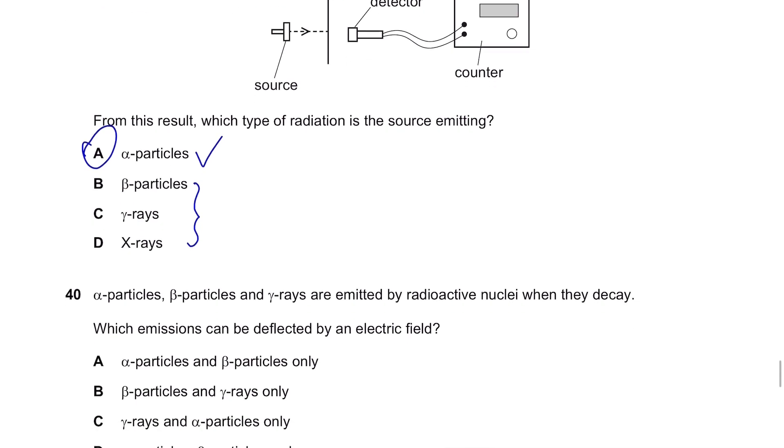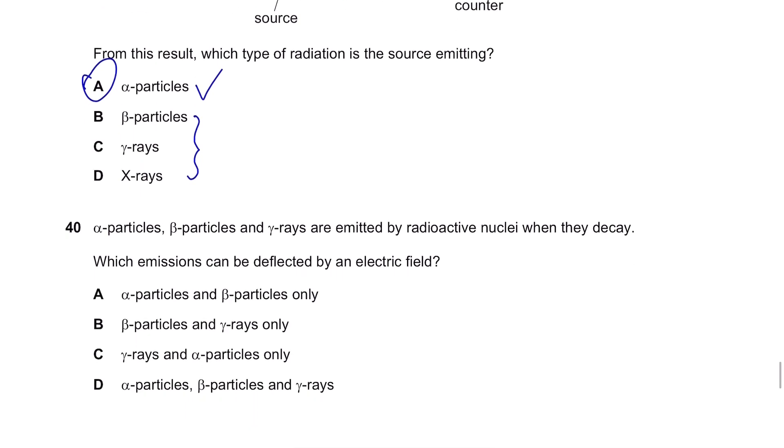Question 40. Alpha particles, beta particles and gamma rays are emitted by a radioactive nuclei when they decay. Which emissions can be deflected by an electric field? It's the ones that have charges positive for alpha particles, negative for beta particles, but none for gamma rays. Therefore, only alpha particles and beta particles can be deflected by an electric field.